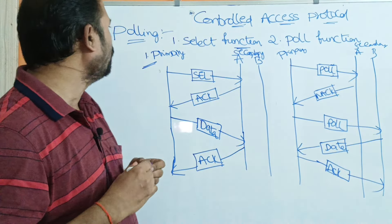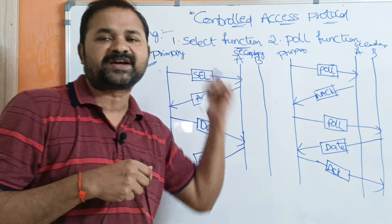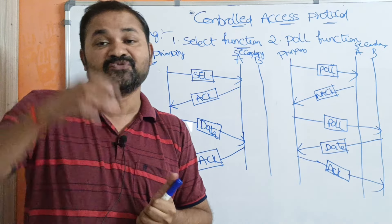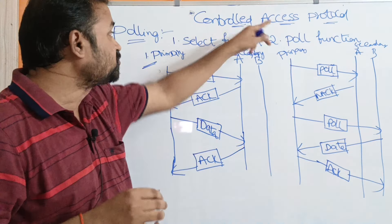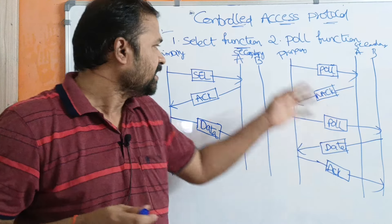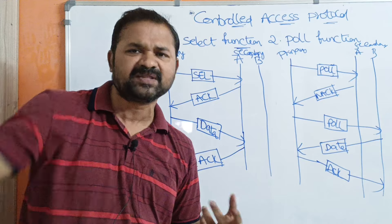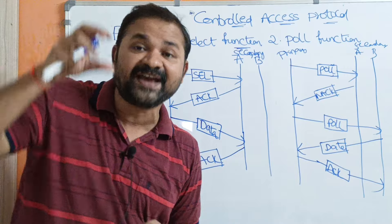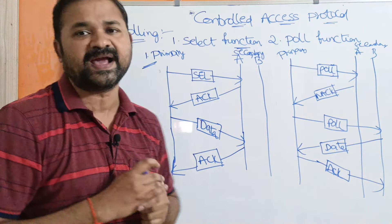This is the polling controlled access protocol. Controlled access protocol means that out of all the devices — A, B, C, D, E — which device can send a frame is controlled by the protocol. It decides which device gets to send data at any given time.